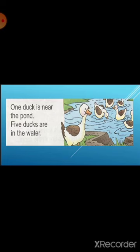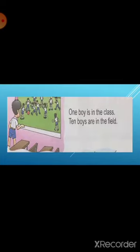Now come to the next paragraph. 'One boy is in the class. Ten boys are in the field.' See children, one boy is in the class and so many boys are playing in the field. When we are talking about one boy, then we will use 'is', and when we are talking about so many boys, then we will use 'are'.